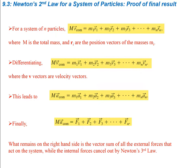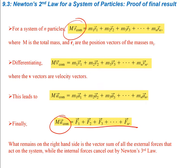For a system of N particles, M times r_com equals the sum of mi*ri, where M is total mass and ri are the position vectors. Taking the derivative gives the velocity vectors; taking the derivative again gives the acceleration vectors, where M times a_com equals the sum of mi*ai. Since mass times acceleration equals force, what remains is the vector sum of all external forces, while internal forces cancel by Newton's third law.